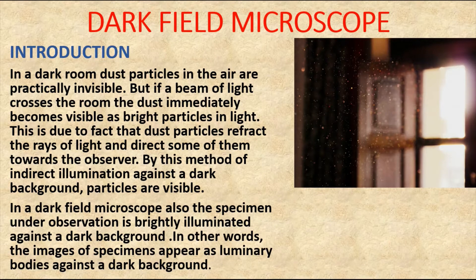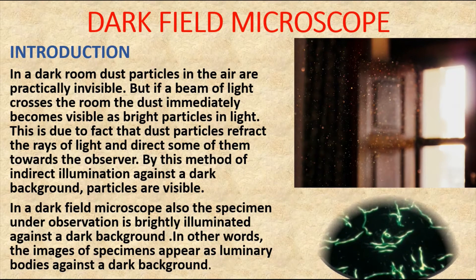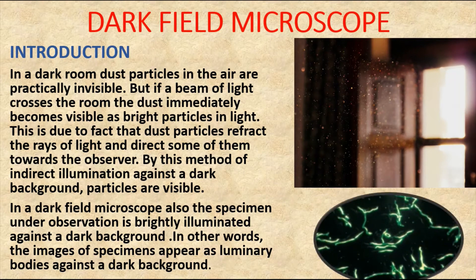In a dark field microscope, the specimen being observed is going to be brightly illuminated against a dark background. That means the images appear as brightening or luminous bodies against a dark background.